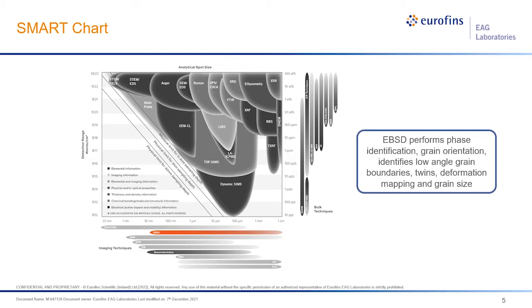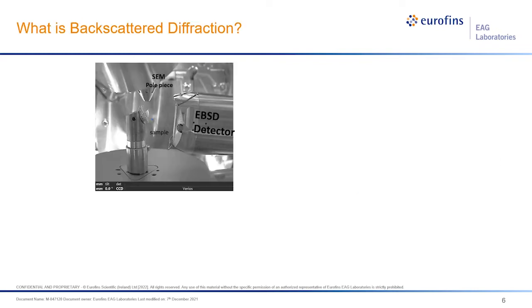EBSD spans from a few tens of nanometers detection range all the way to one centimeter. The smallest grain size we've analyzed was close to 20 nanometers for some nanocrystalline structures, and the largest scan size provided to clients was a couple centimeters in width. With that capability, EBSD performs phase identification, grain orientation mapping, and can identify and analyze grain boundaries including low-angle grain boundaries and twins.